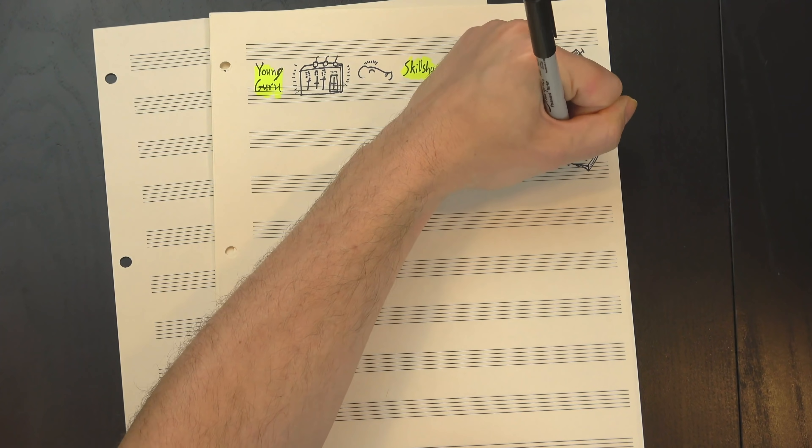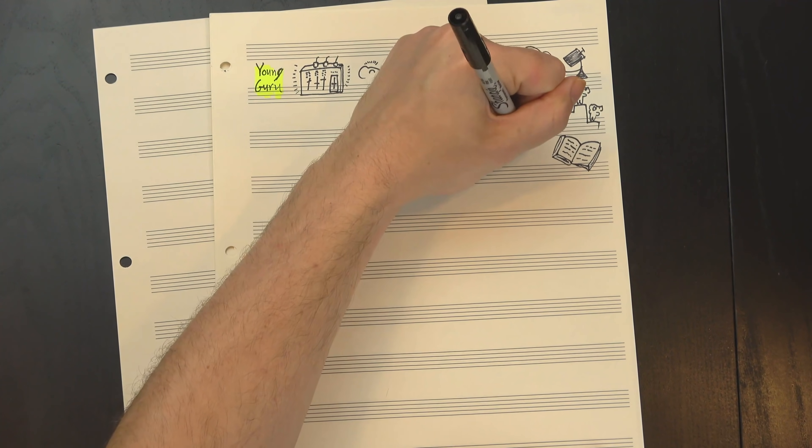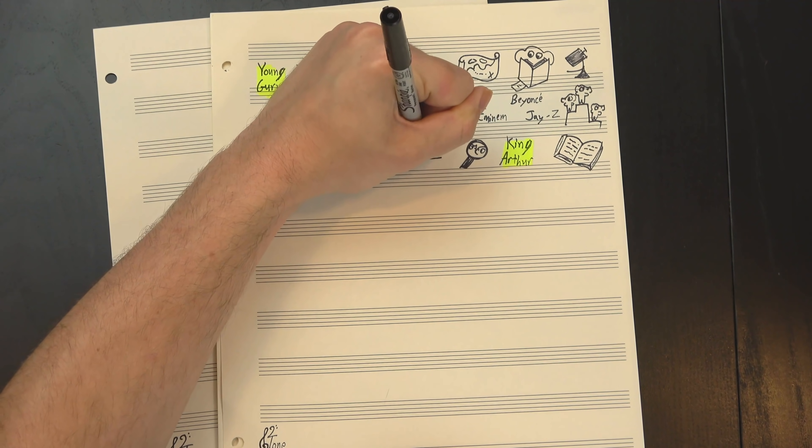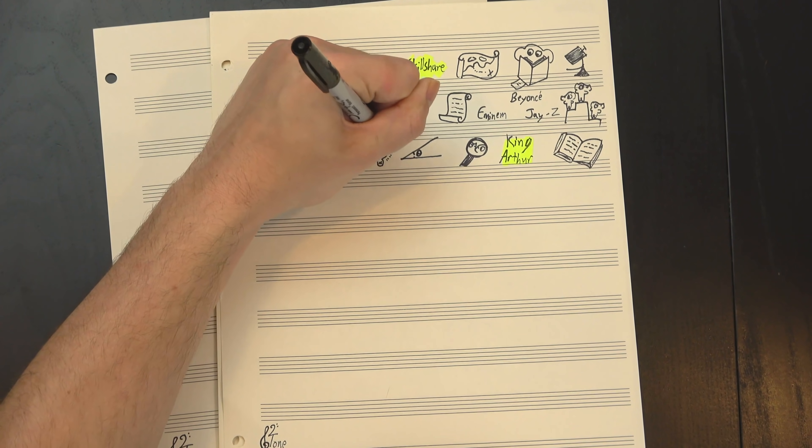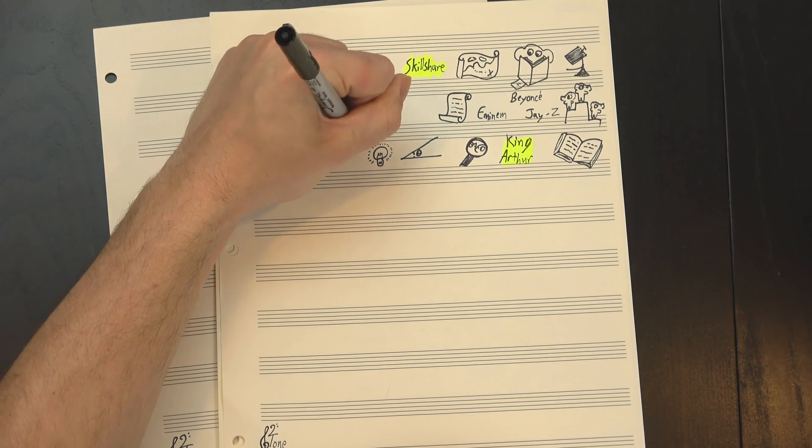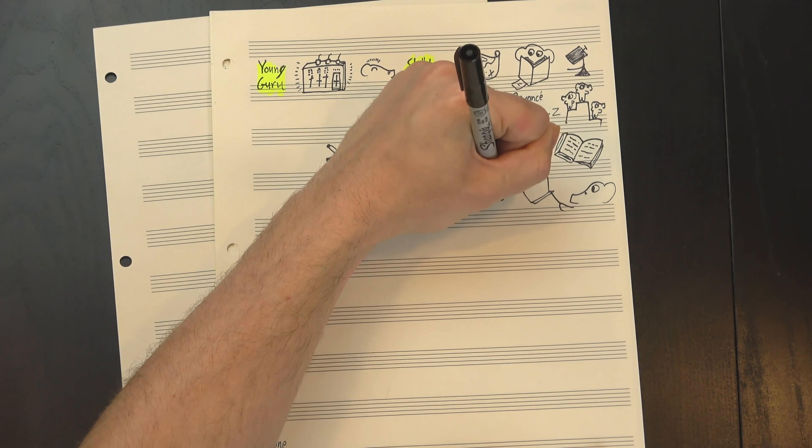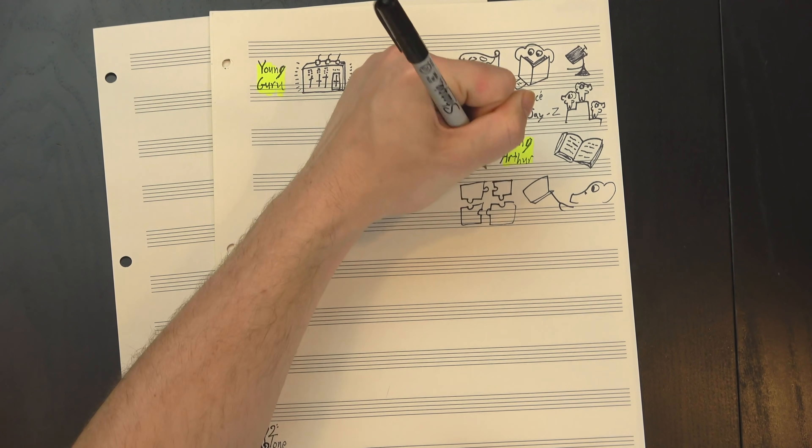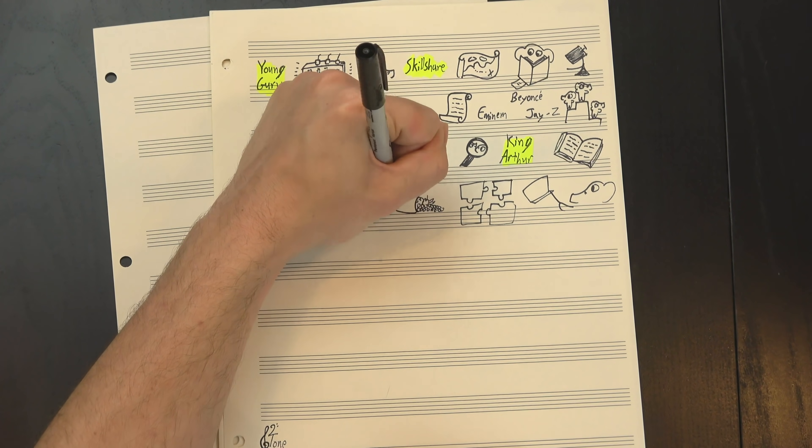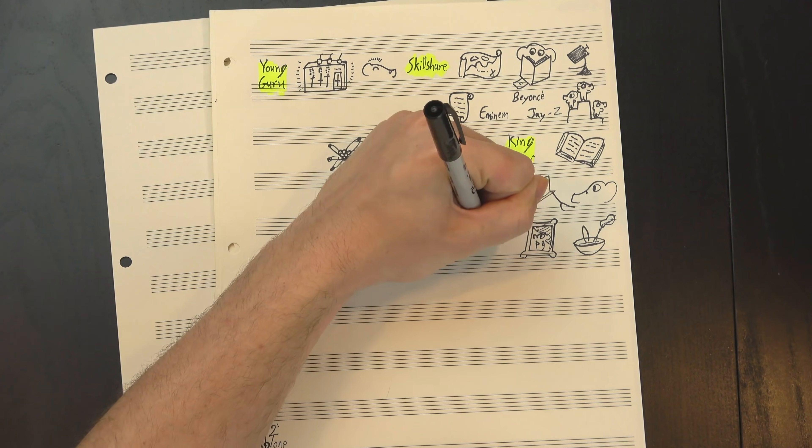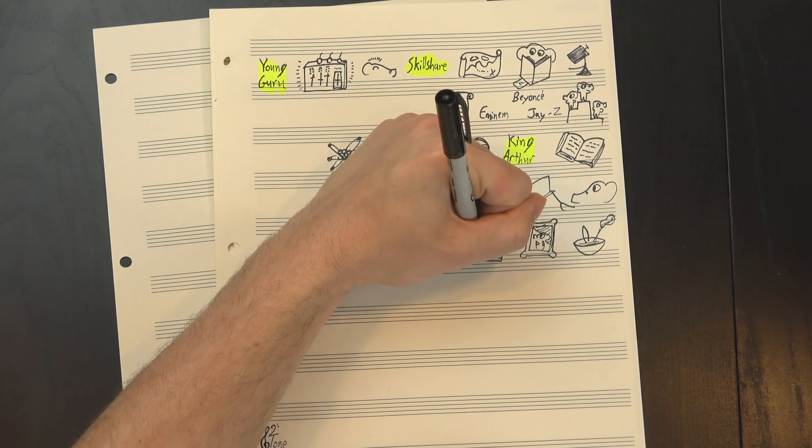But the best part is that Skillshare has a bunch of other classes on the same topic, including one by producer and DJ King Arthur. It's also really insightful, but because he's coming at it from a different angle, he winds up focusing on different parts of the problem, so going through both classes helps you understand the art of mixing more fully than any one teacher could provide on their own. Getting different perspectives allows you to find the approach that works best for you, and since Skillshare offers tens of thousands of classes in music production, songwriting, cooking, art, and more, it's easy to get dozens of different takes on anything you might want to learn about.